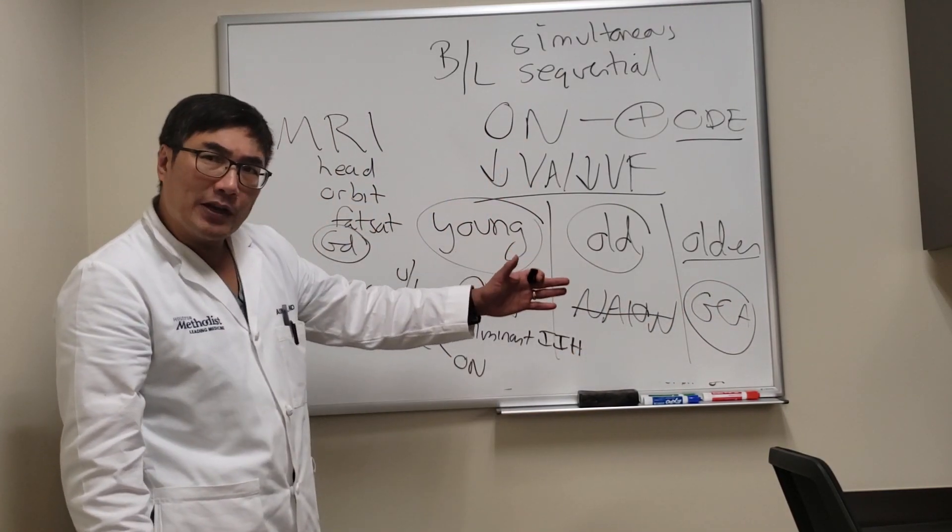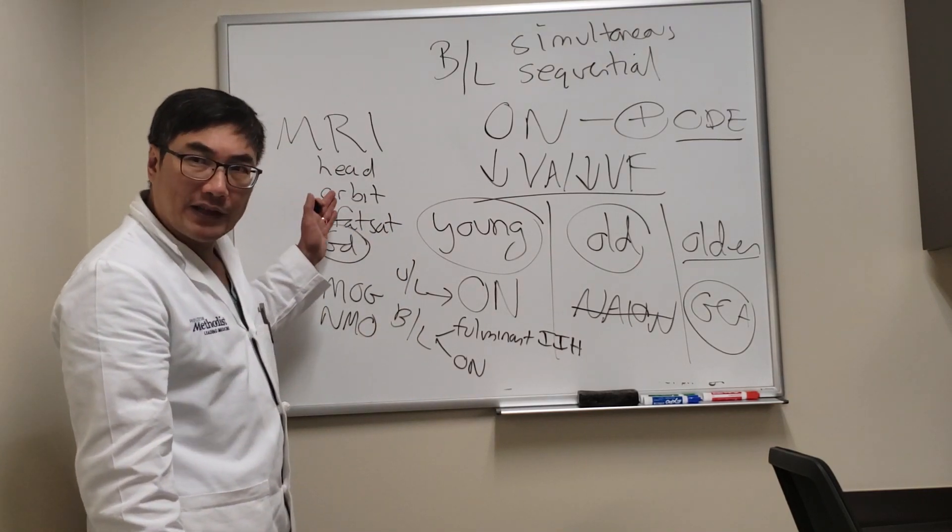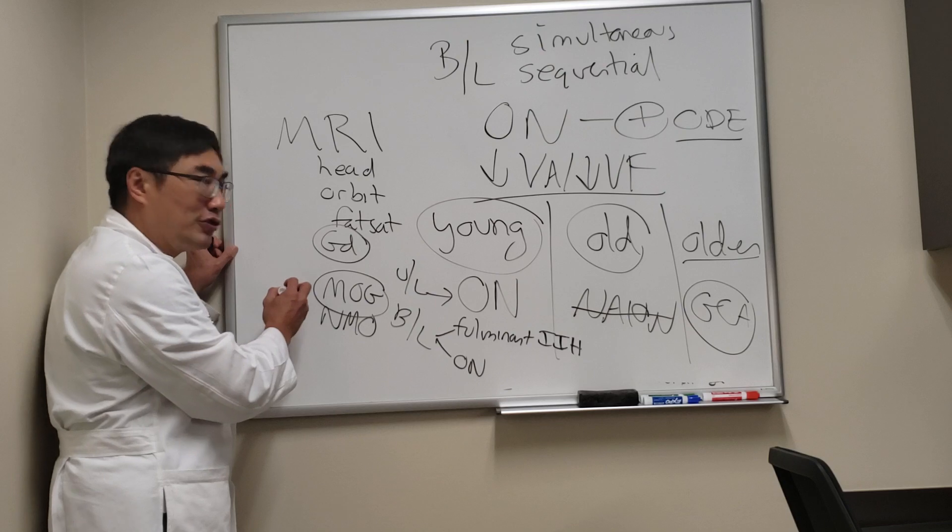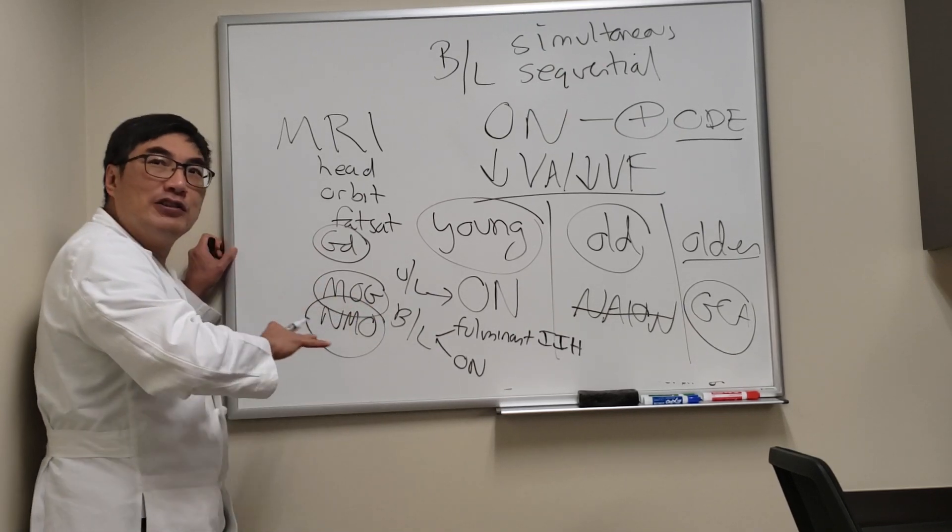However, if the sed rate and CRP are normal and we have enhancement, then we're going to look at the pattern of the enhancement. In MOG the pattern is usually perineuritis. In NMO, longitudinally extensive.